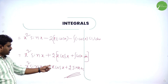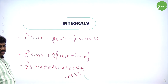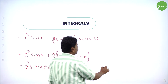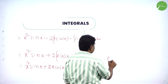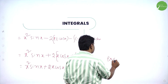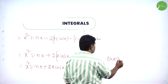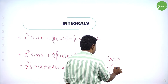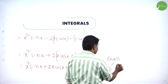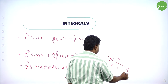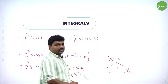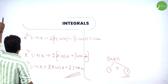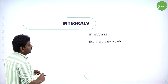You can take sin(x) common or leave it as is. Here we applied the parts rule two times — first time for x²·cos(x), and second time again for x·sin(x). You should know parts to solve this problem.